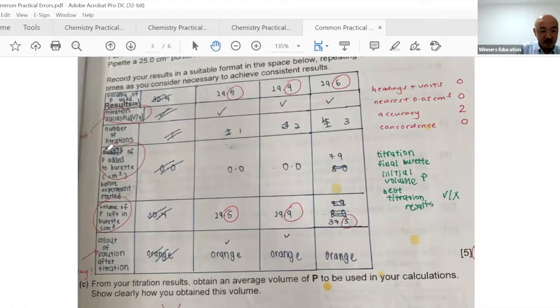Look at this titration results table. The student wrote 'volume of P added' - this is wrong. You must follow the proper terminology - it's called 'reading,' not 'volume of P left.' Don't write 'titration successful' - don't try to be clever. The student did the experiment correctly but lost three marks because of improper labeling and formatting.